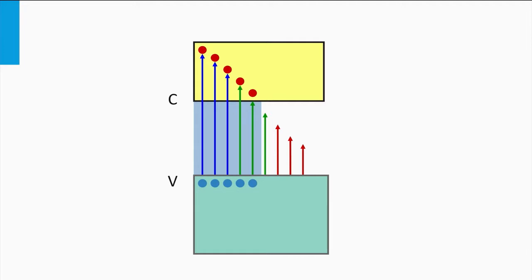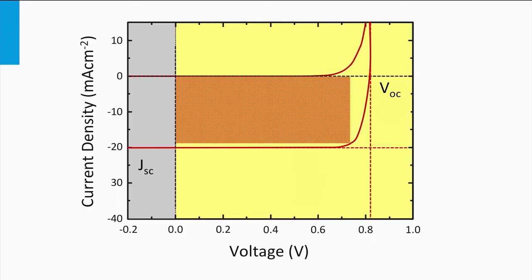Only the blue and partly the green photons are able to excite charge carriers. If we look at the JV curve, this is indicated by a relatively low short circuit current density, while due to the large band gap, a higher open circuit voltage can be obtained.